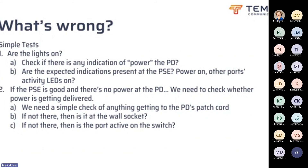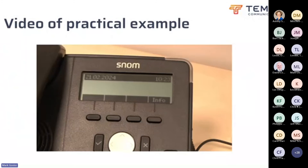If there's no power at all, check at the patch cord end. Maybe the powered device has just died. Check at the wall socket — maybe the patch cord's broken. Check at the next patch panel and switch and progressively break down the system. In the next slide you'll see me diagnosing one of those weird situations where a phone is on but not working.